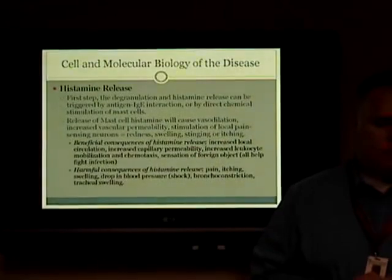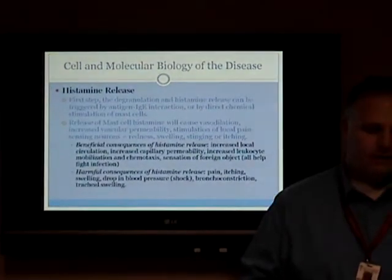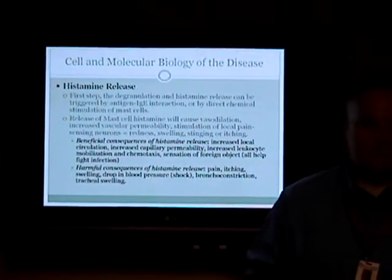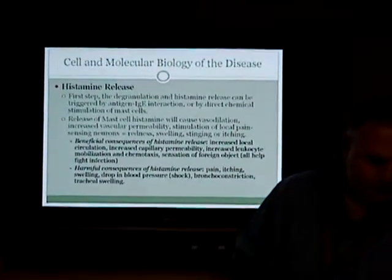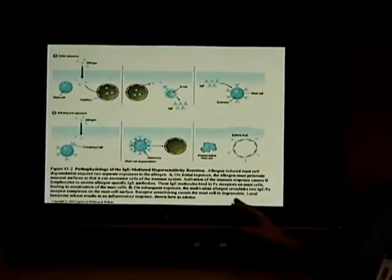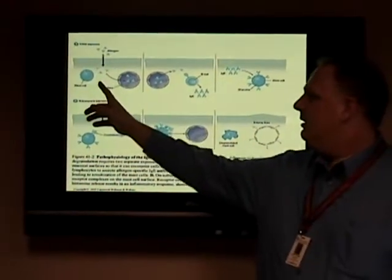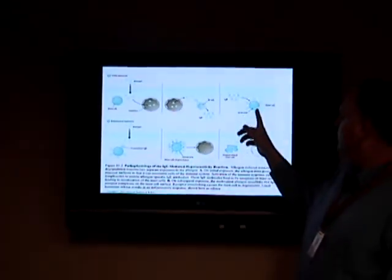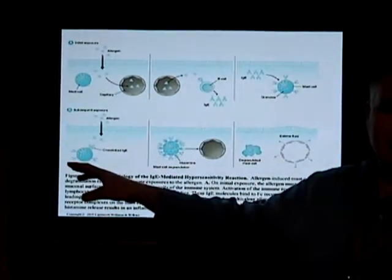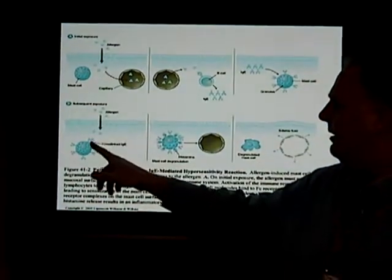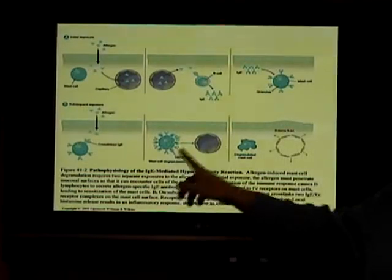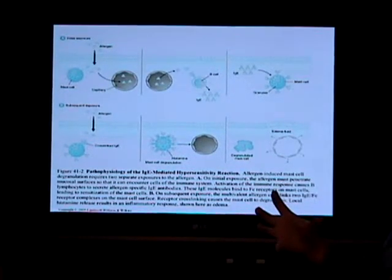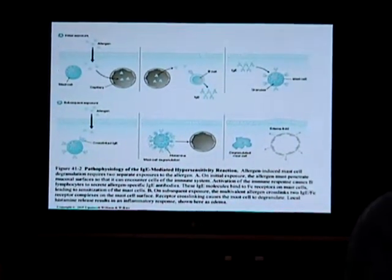Some of the harmful consequences of histamine release, which can also be associated with anaphylaxis, are pain, itching, swelling, and in severe cases, drop in blood pressure, bronchoconstriction, and tracheal swelling. This picture represents the allergen coming in and getting exposure to the body. B cells will produce IgE antibodies, which will attach to mast cells in a subsequent reaction. The antigen will present on the mast cell, which will create degranulation — in this case here, this is a capillary bed, and it's going to loosen up and leak a lot more fluid.